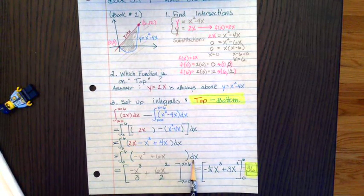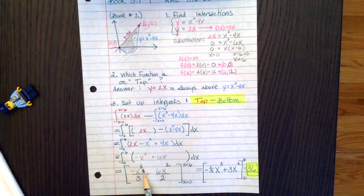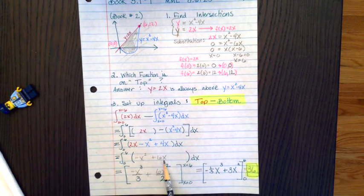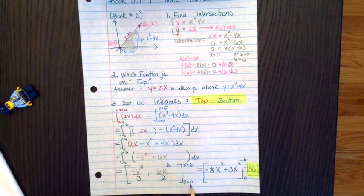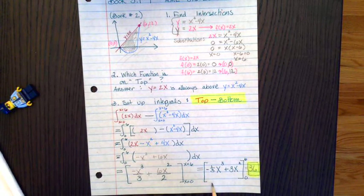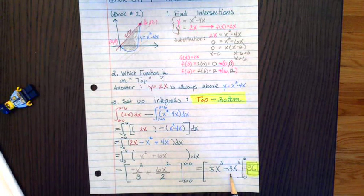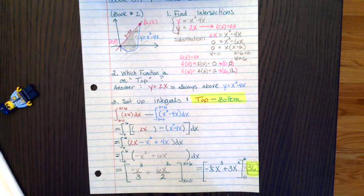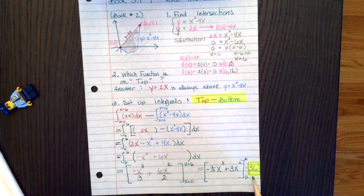Using what you know from unit 4, this integration is negative x cubed over 3 plus 3x squared from 0 to 6. Substituting in a 6 for x, and then subtract from that the x equals 0, which is just 0. So we end up getting 36.